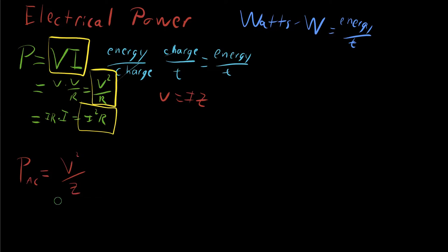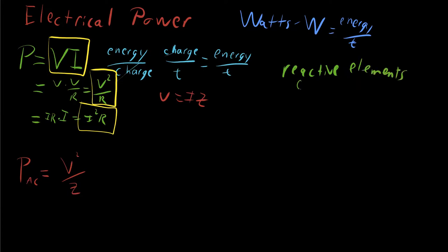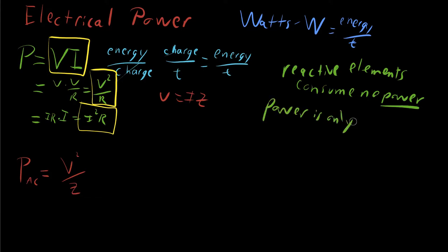The reason is that impedance has both a resistive component and a reactive component, and reactive terms consume no power — this is critical. Power is only lost over real resistance. This means that if the impedance is purely reactive, there's no power being dissipated through that system.